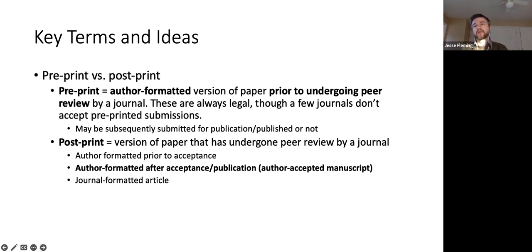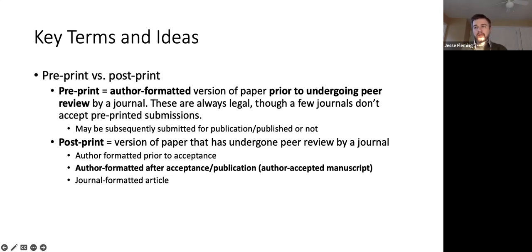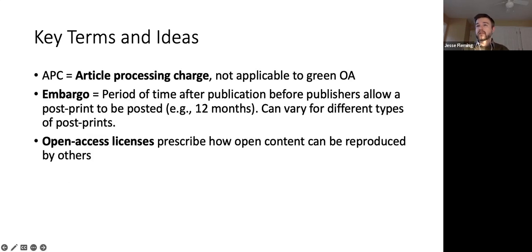There's a distinction between key terms. A preprint is your author-formatted paper before or upon submission to a journal — essentially your paper in a Word document. A postprint is a preprint that has undergone peer review and been improved through peer feedback. In some instances, journals or publishers may impose a hold on when you can share the postprint because of the value added through peer review.